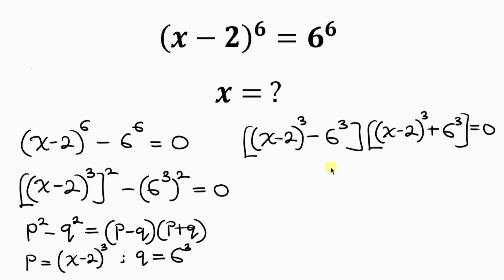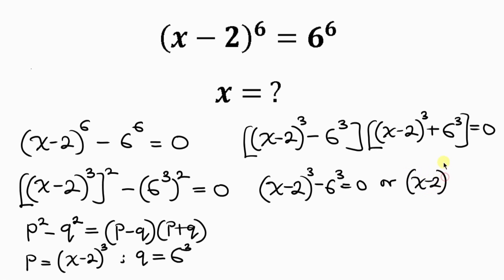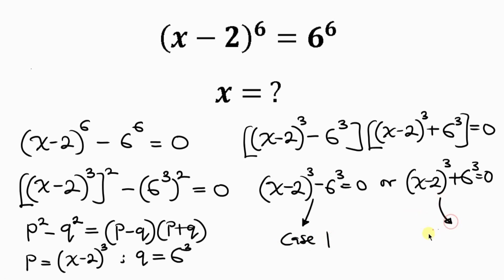We have two cases: Case 1 is x minus 2 all raised to the 3, minus 6 to the 3, equal to 0. Case 2 is x minus 2 all raised to the 3, plus 6 to the 3, equal to 0.